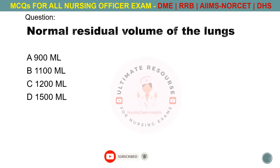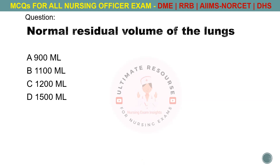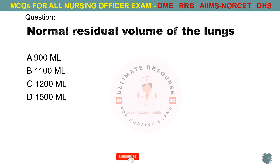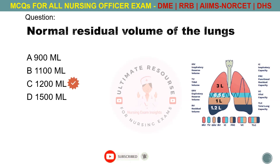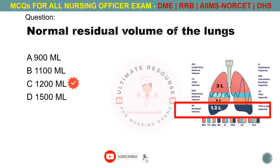Normal residual volume of the lungs. Options are A. 900 ml, B. 1100 ml, C. 1200 ml, D. 1500 ml. The answer is C. 1200 ml.